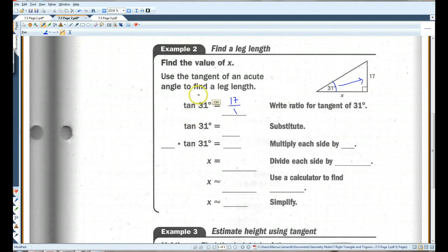Actually, I think they wanted you to do this first. So, opposite over adjacent. And we know that the opposite side is 17. The adjacent side is X. There we go. Okay. I'm going to multiply each side by X.